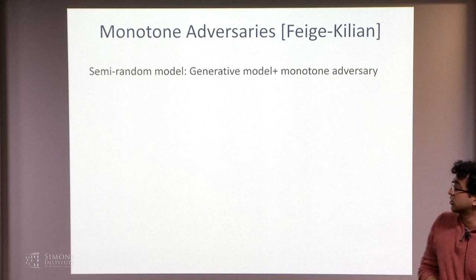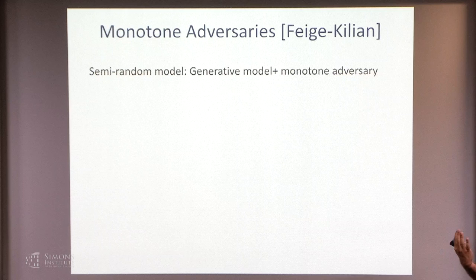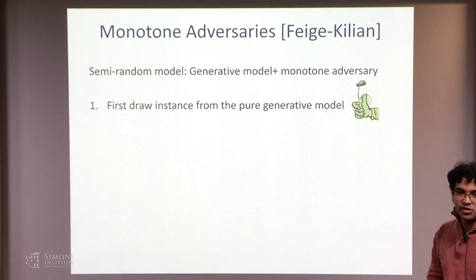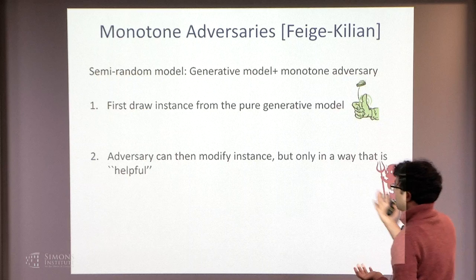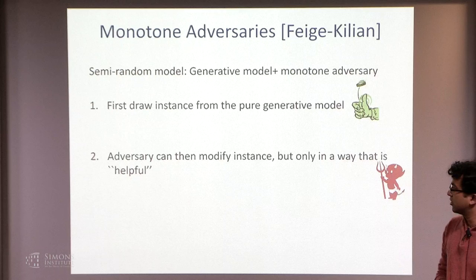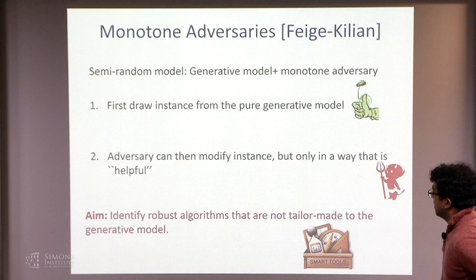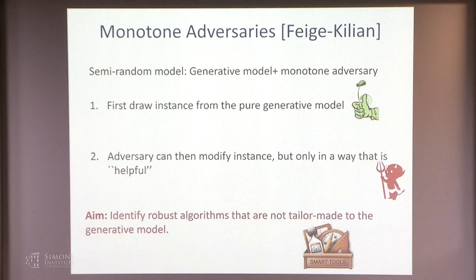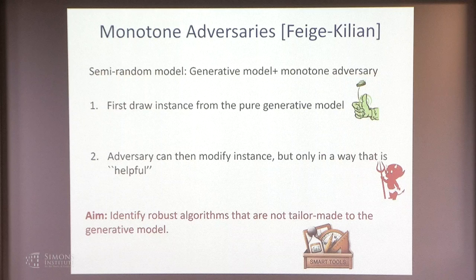Semi-random models were studied first by Blum and Spencer in the context of graph coloring. There have been a wide variety of semi-random models depending on the kind of adversarial choices you allow. In this generality, you can capture many different models — for instance, things like the epsilon contamination model or the Huber model. In this talk, I'll focus on one particular family: monotone adversary models. Here, your semi-random model is really a generative model plus this monotone adversary. You draw your instance from the usual generative model, and then this adversary can modify the instance, but only in a way that's helpful.